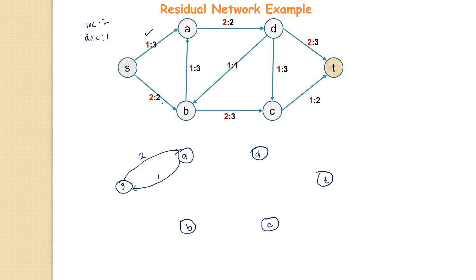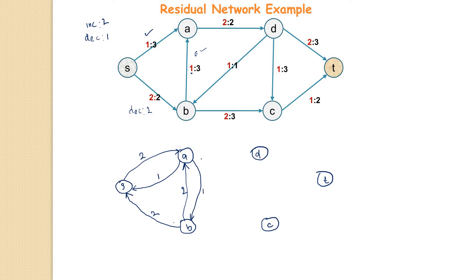For the edge from s to b: we cannot increase it, so there is no forward edge, but we can decrease it from 2 to 0, so we add a backward edge of 2. For the edge from a to b: we can increase from 1 to 3, giving an increment of 2, so a forward edge of 2. We can also decrease from 1 to 0, meaning a backward edge of 1.